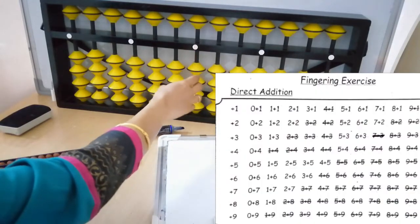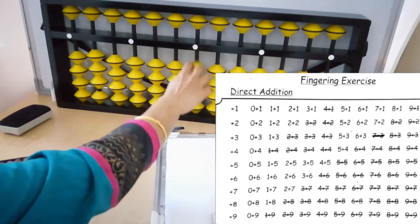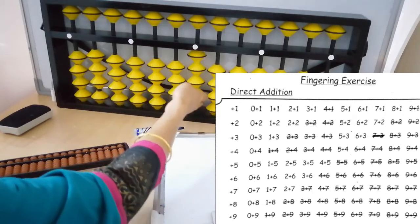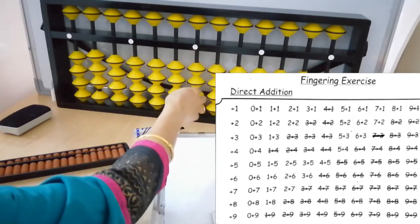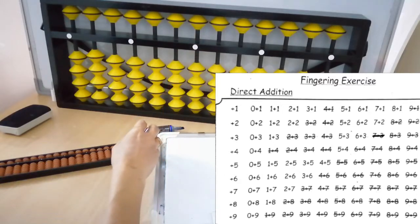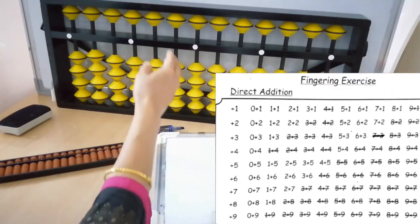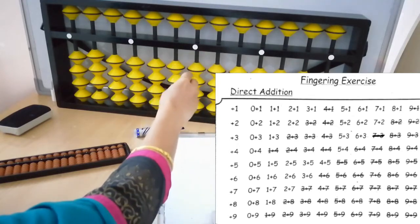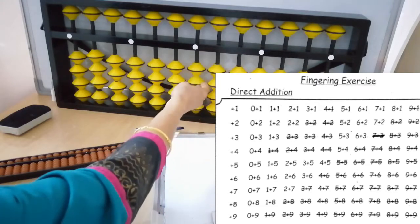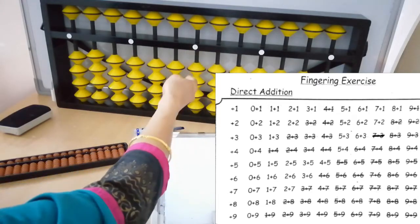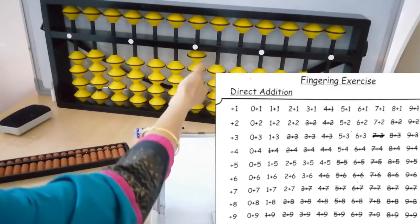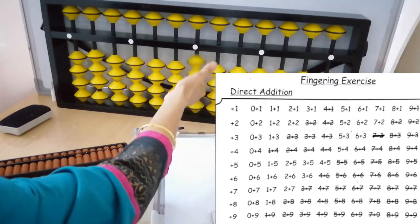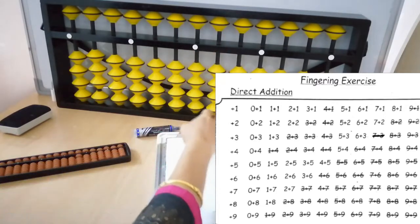Then we cancel the next. If you have to do it, you can do it. The next step is 2 to 9: fingering exercises. That means 0 plus 2, then Z0, then 1 plus 2, then 2 plus 5, then 2 plus 5, Z0. Then you can do it. If you do it, I will explain the next.